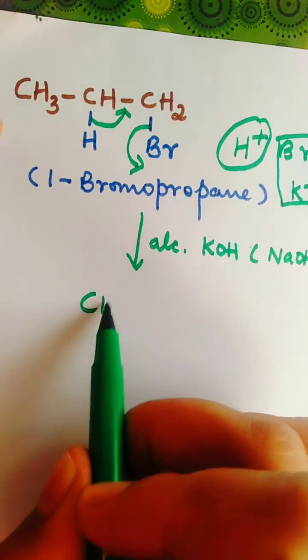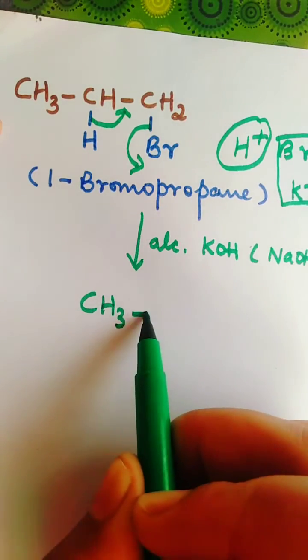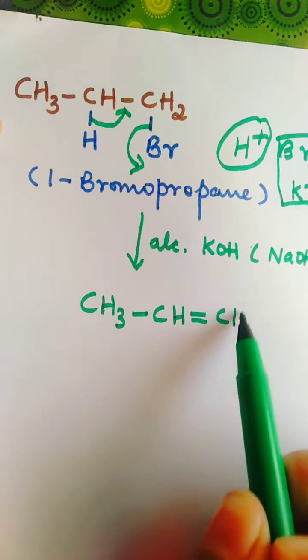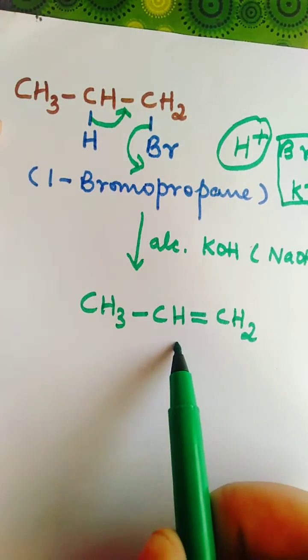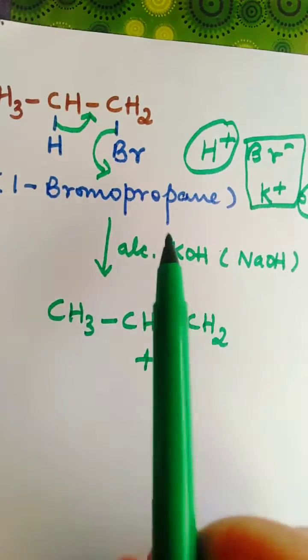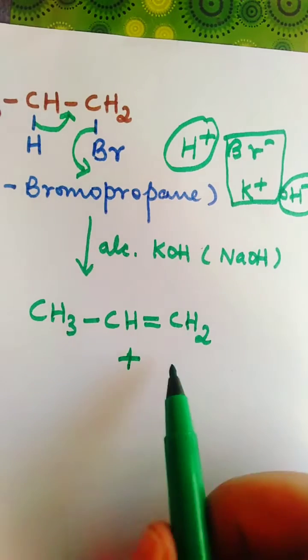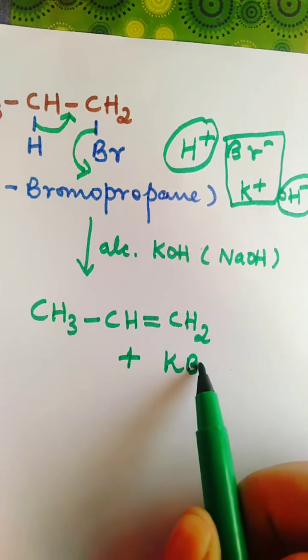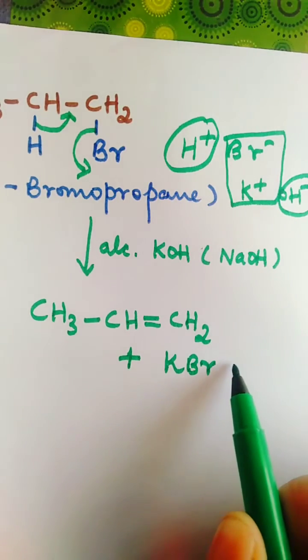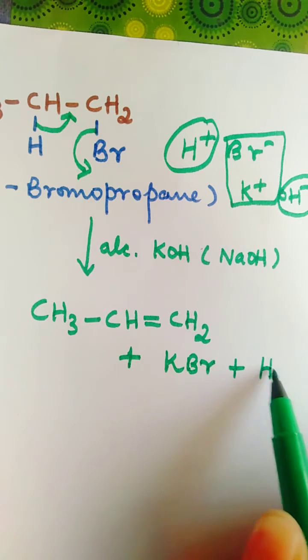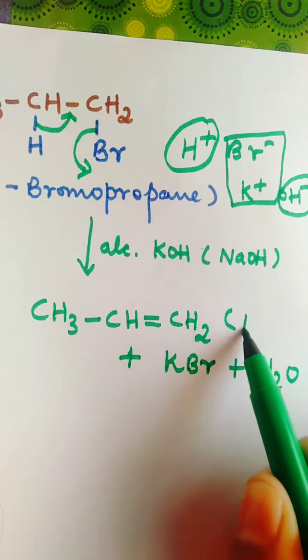We have CH3-CH=CH2, plus, as I have told you, H+ with OH- and K+ with Br-, so we have potassium bromide and water.